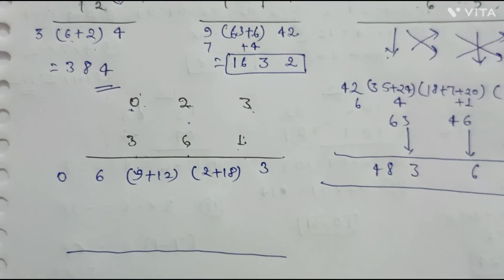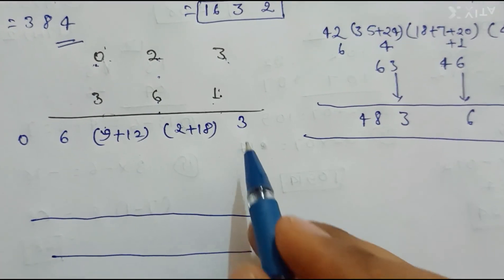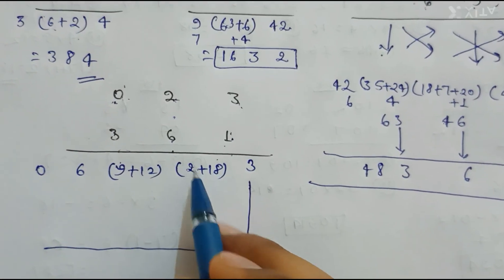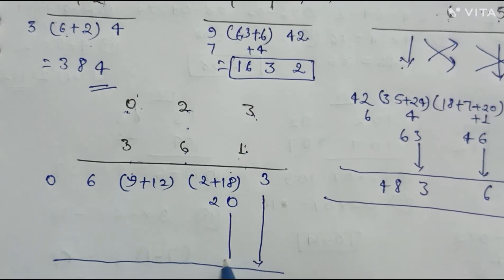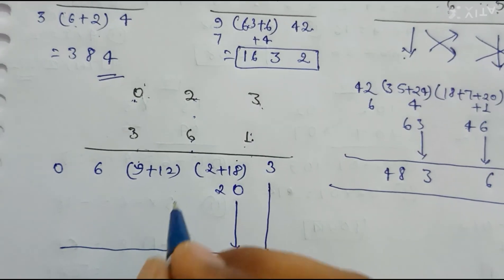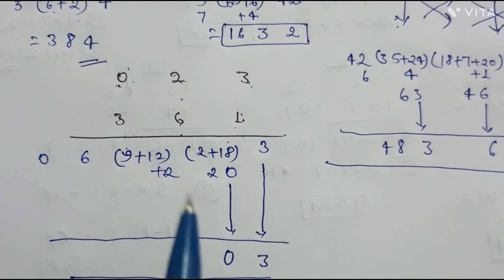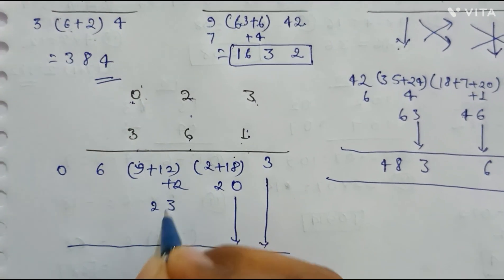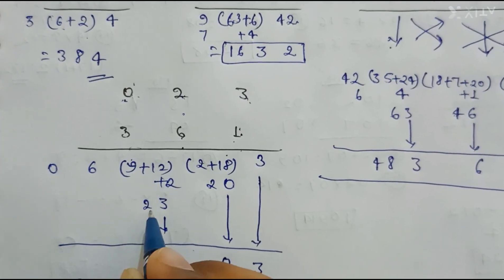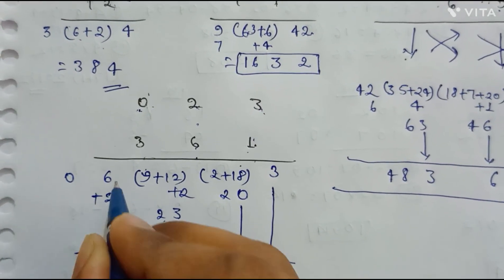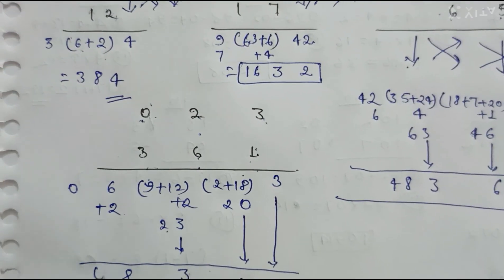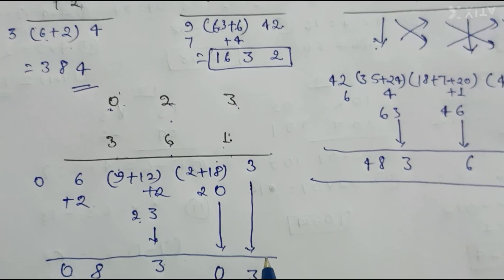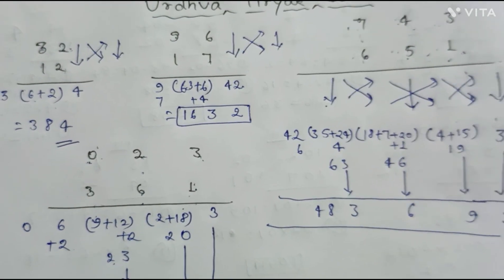Now putting a line and writing the answer: copy 3, then 20 gives us 0 and carry 2. Then 12+2+9=23, so we write 3 and carry 2. Then 6+2=8, and 0 stays. The final answer is 0830, which means 830. In this manner we can do multiplication of a 2-digit number by a 3-digit number using the Urdhva-Tiryak sutra crisscross method.